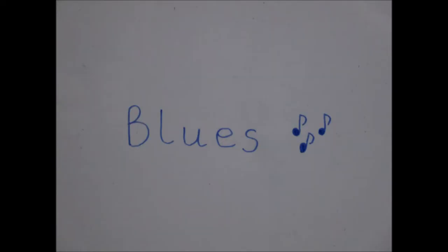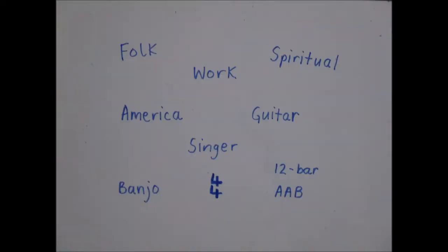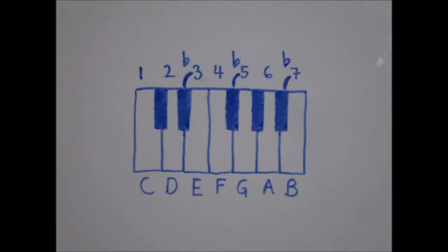Let's begin with the blues. The blues originate from America. The lyrics of the songs usually focus around folk, work and spirituality. There's a singer, a guitar and sometimes a banjo. The time signature is 4-4 and it follows a 12-bar blues structure of AAB. It's important to remember that the blues scale flattens the 3rd, 5th and 7th notes of the scale.